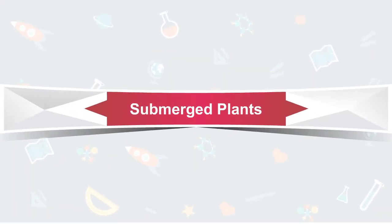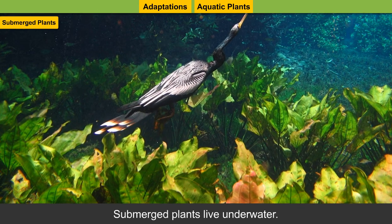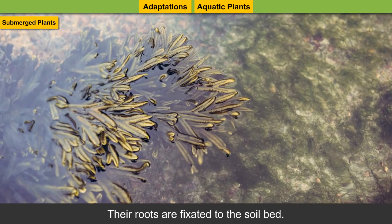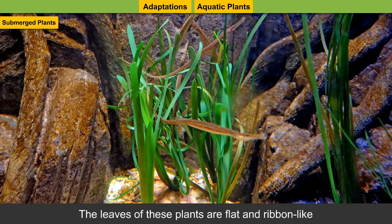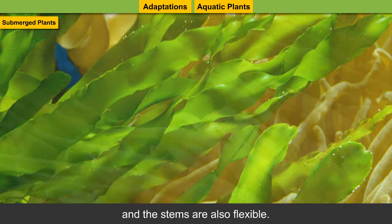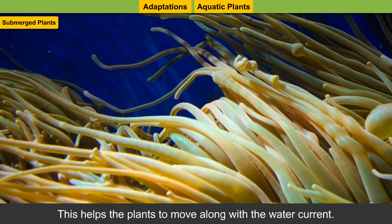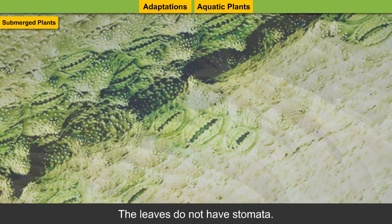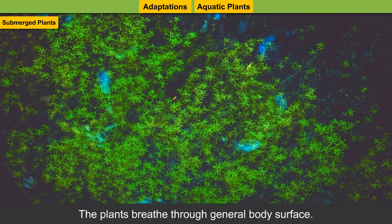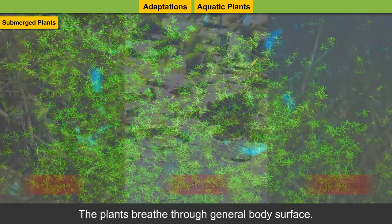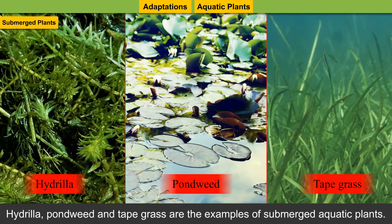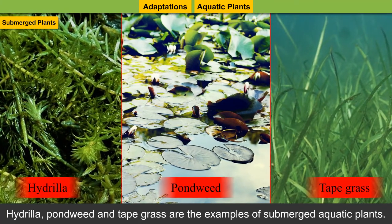Submerged plants live under water with their roots fixed to the soil bed. The leaves of these plants are flat and ribbon-like, and the stems are flexible, helping the plants move along with the water current. The leaves do not have stomata, and the plants breathe through their general body surface. Hydrilla, pond weed, and tape grass are examples of submerged aquatic plants.